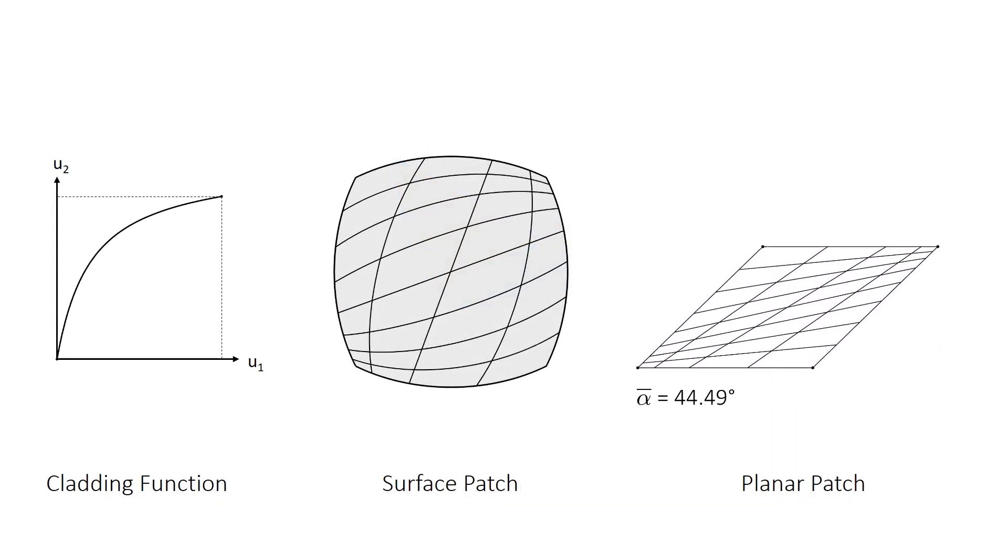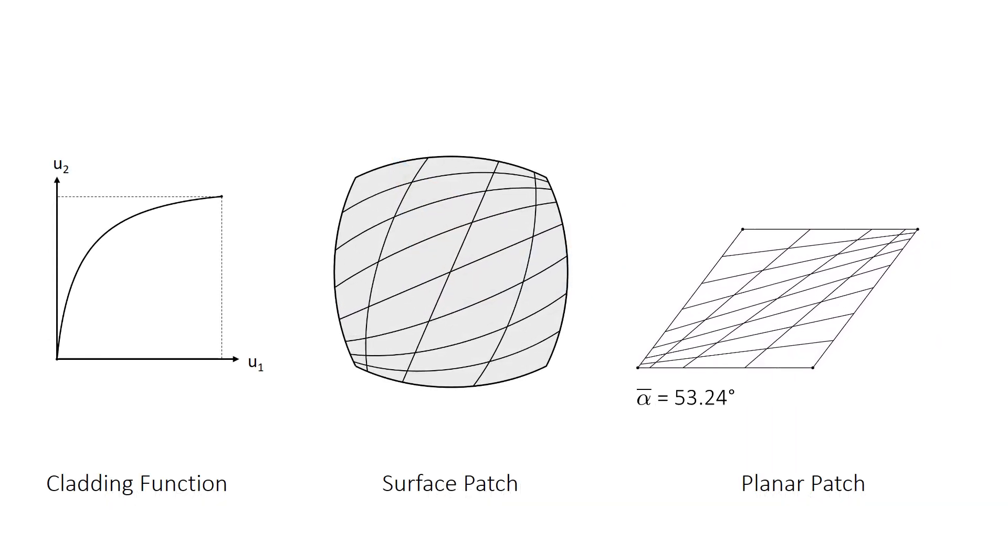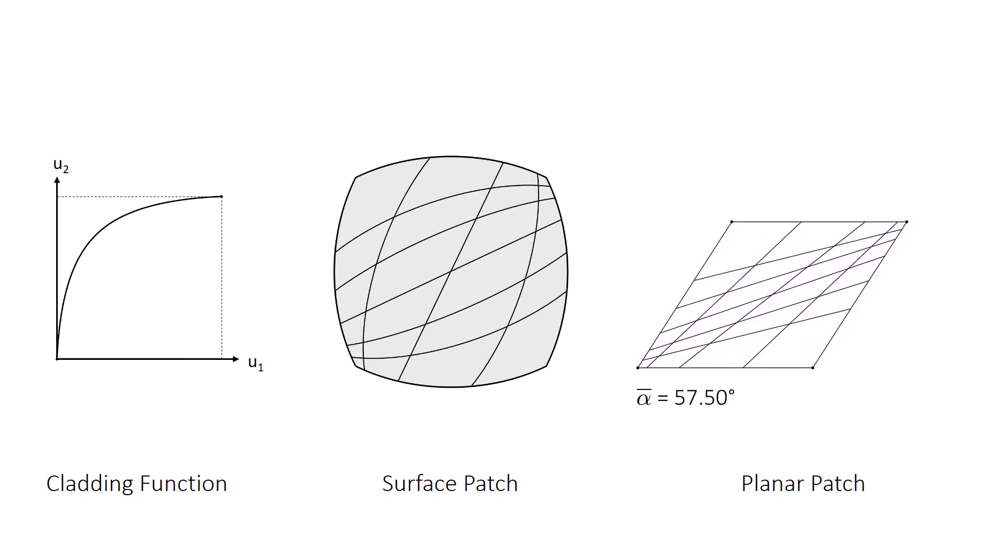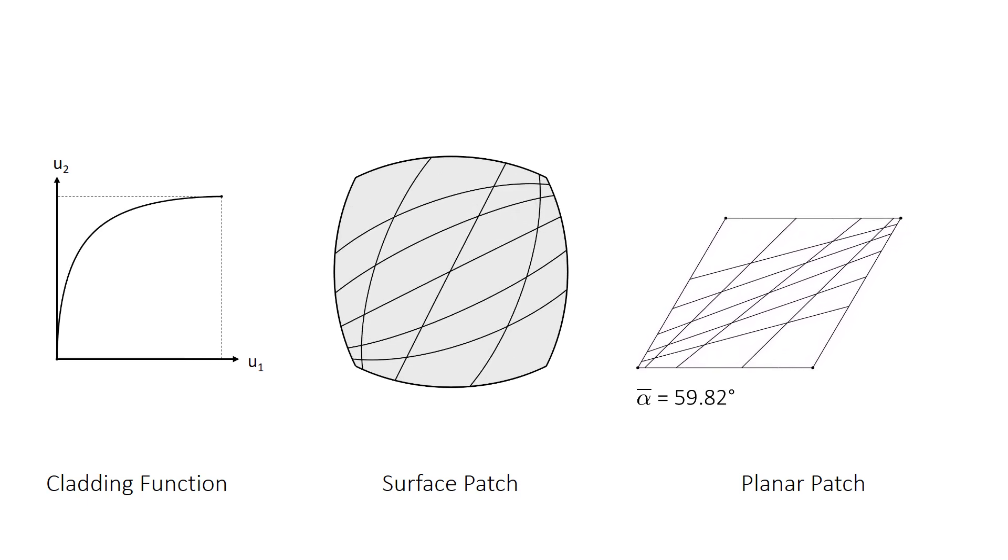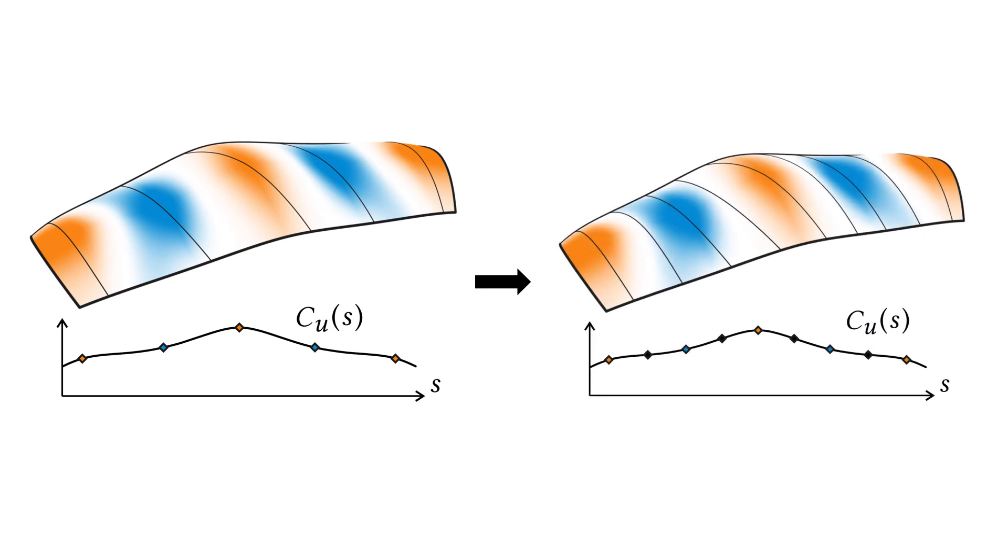The cladding function determines the distribution of members in the planar and the spatial grid. We set constraints to prevent invalid cladding functions. After finding a minimum set of grid members to capture surface features well, we present a method to densify the grid.